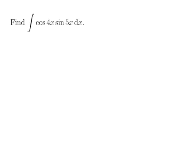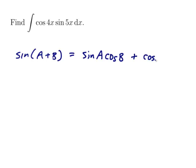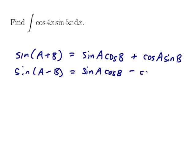Well, there are trig identities where there's cos times sines. Let me think. We know that sin(A+B) is sin A cos B plus cos A sin B. And we know that sin(A-B) is sin A cos B minus cos A sin B.